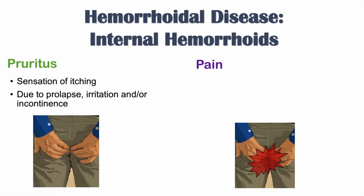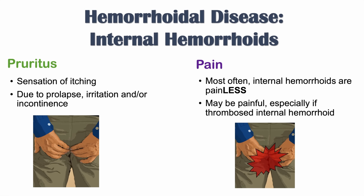What's important to take away is that most often internal hemorrhoids are painless — bright red blood per rectum that is painless is classically described. If pain does occur, it's more often caused by a thrombosed internal hemorrhoid, meaning a clot has formed in the hemorrhoid. Other sensations can include burning and general discomfort, but painless bright red blood per rectum is the key takeaway.